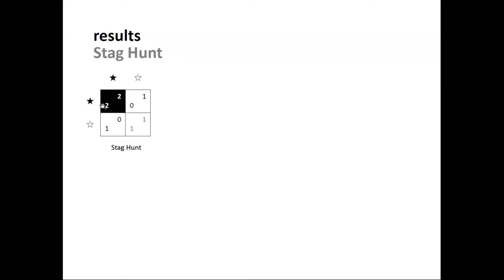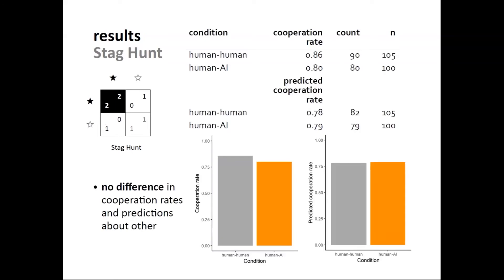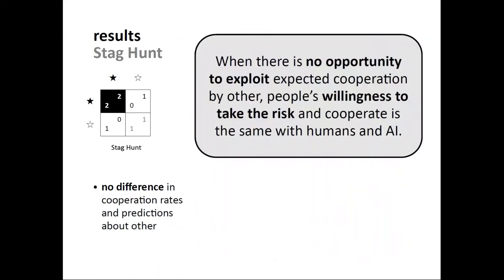In the Stag Hunt game — where cooperation is risky, it only pays to cooperate if you expect the other to cooperate, but if you do expect them to cooperate it is not tempting to defect — the results were essentially the same regardless of co-player type. Cooperation rates were high for both interactions with humans and with AI, and expected cooperation rates were equally high for both. There was no difference whatsoever in behavior or expectations. When there is no opportunity to exploit expected cooperation for personal gain, people's willingness to take risk and cooperate with a machine is the same as with humans.